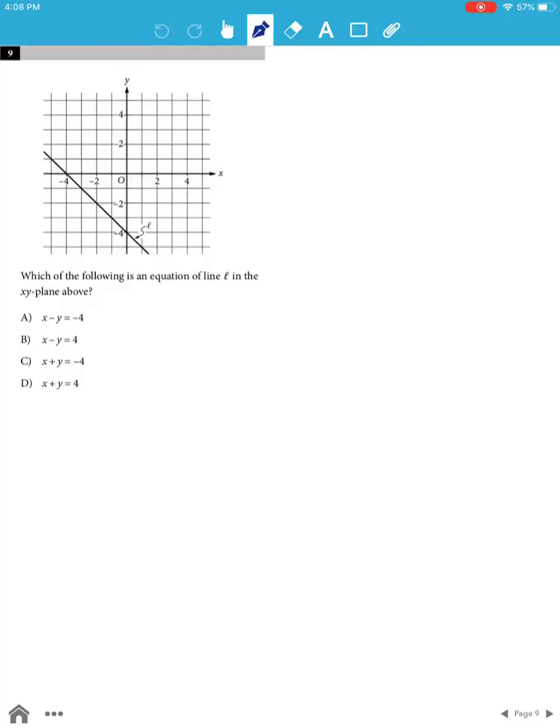From the graph, when y is 0, x is negative 4, and when y is negative 4, x is 0.